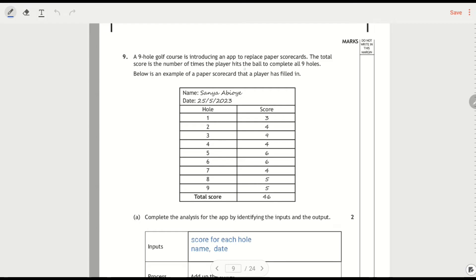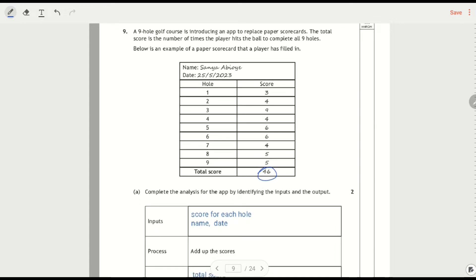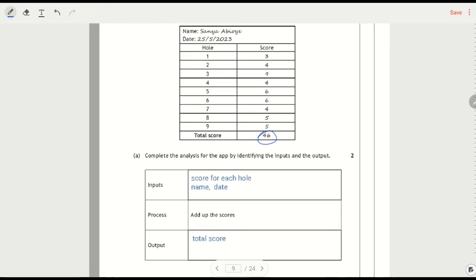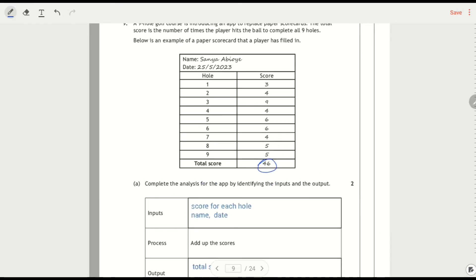The total score is the number of times the player hits the ball to complete all nine holes. Below is an example of a paper scorecard. You're totaling up all these scores that they've put in for each round. Completing the analysis: the process is adding up the scores, output would be the total score, input would be the score for each hole, and also the name and the date. Don't forget those.